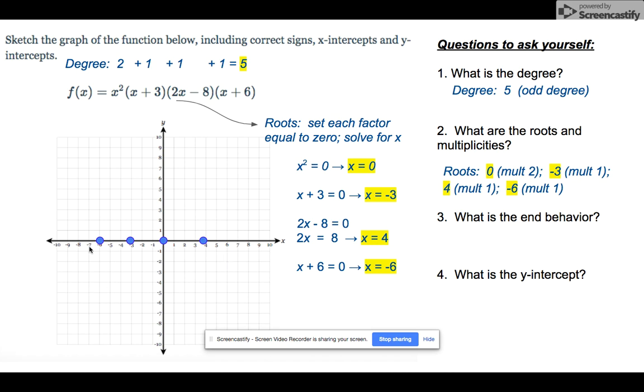But we have to think about end behavior. Remember, the sign of the leading coefficient will tell you about the right end behavior. This is a positive leading coefficient, therefore my right end will go up. Remember this is an odd degree function, so the end behaviors don't match, therefore my left end will go down.